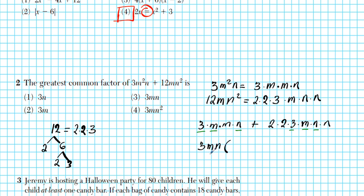3mn will be the greatest common factor. Factoring it out, we're left with one m on the left side, and on the right side: the extra m, the two 2's (which is 4), and the last n. So 3mn times (m + 4n) — the GCF is 3mn. Our answer is going to be option number 3.